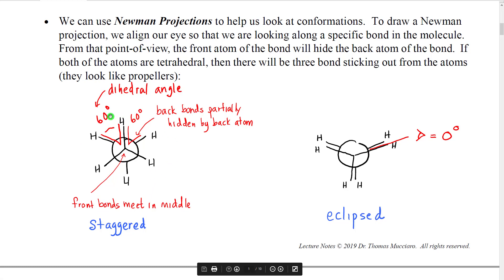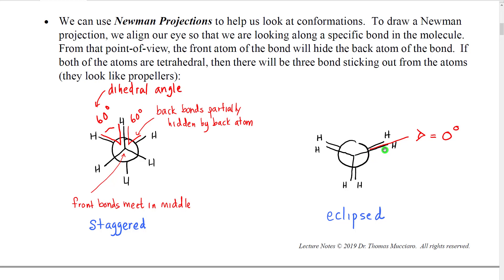In the staggered conformation, shown here in a Newman projection, we can see that the dihedral angle between a hydrogen on the front and an adjacent hydrogen on the back would be 60 degrees. If we draw the Newman projection of the eclipsed conformation by rotating the front atom so the bonds move until the dihedral angle becomes 0, we would see the three groups in front overlap the three groups in the back. In practice, we slightly offset the front and back bonds so we can see both. This would be the eclipsed conformation.